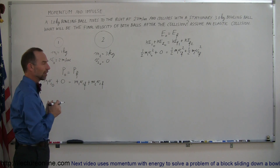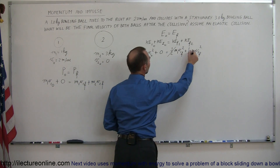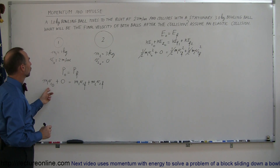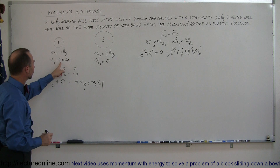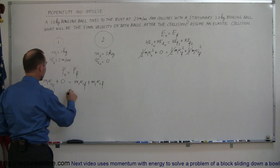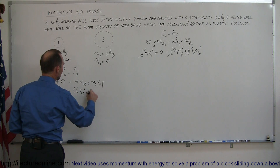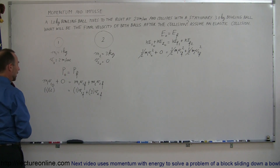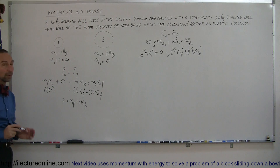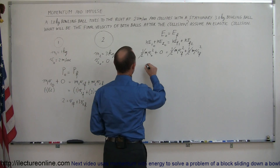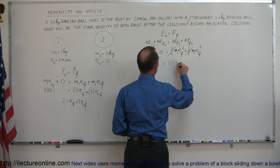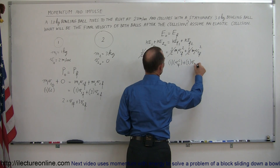Now we have to solve these two equations simultaneously. We can multiply both sides of the energy equation by two to eliminate the one-halves, then plug in the known values. With m1=1, m2=3, and v1 initial=2, the momentum equation becomes: 2 = v1 final + 3·v2 final. The energy equation becomes: 4 = v1 final squared + 3·v2 final squared.